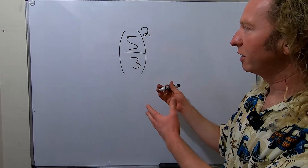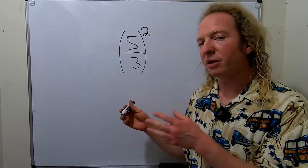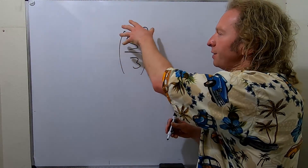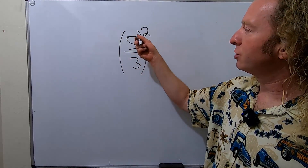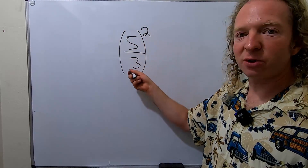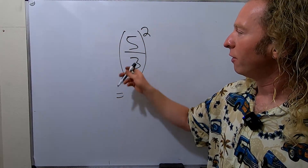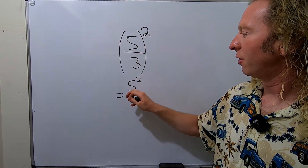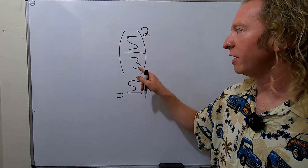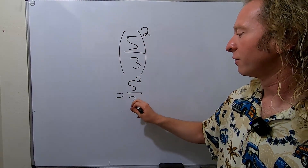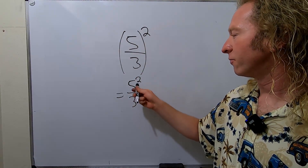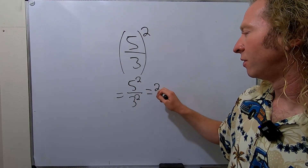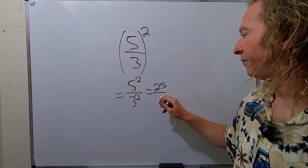In this video we're going to evaluate this expression. Whenever you have a fraction being raised to a power, you can just raise each piece to the power. So it becomes 5 squared over 3 squared, which gives us 25 over 9.